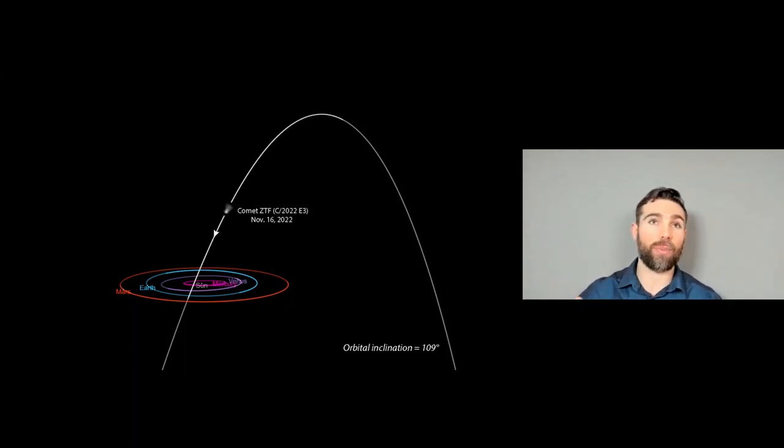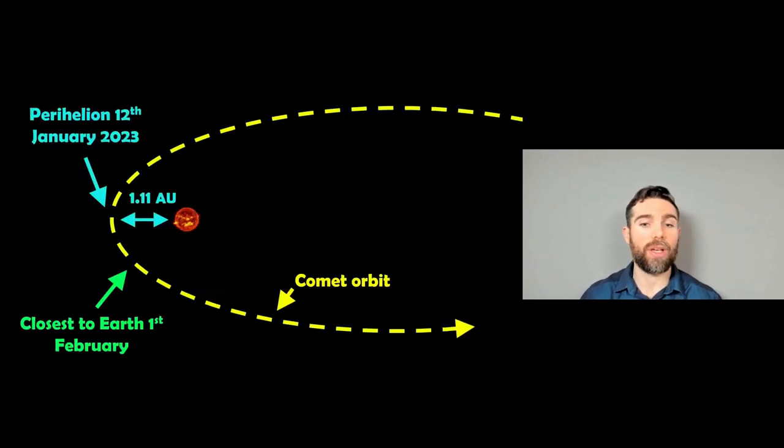So as it comes in, it's actually going to make its closest approach to the sun as well. So its closest approach to the sun will be at the perihelion, which is on the 12th of January, 2023, and that distance it will be to the sun will be just over 1 AU. 1 AU is the average distance the Earth is to the sun. So it's going to get quite close to Earth's orbit, but it doesn't make its closest approach to Earth until a little bit later on. So it makes its closest approach to Earth on about the 1st of February, so early February, and it will be about 0.29 AU away from Earth at that particular point. And that will be when we see it the brightest in the sky from our reference point.